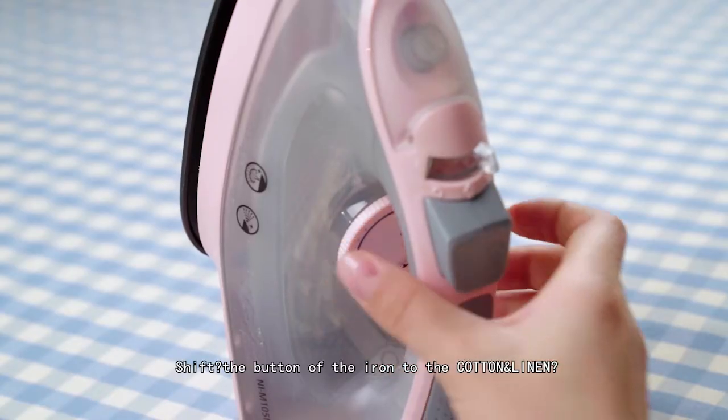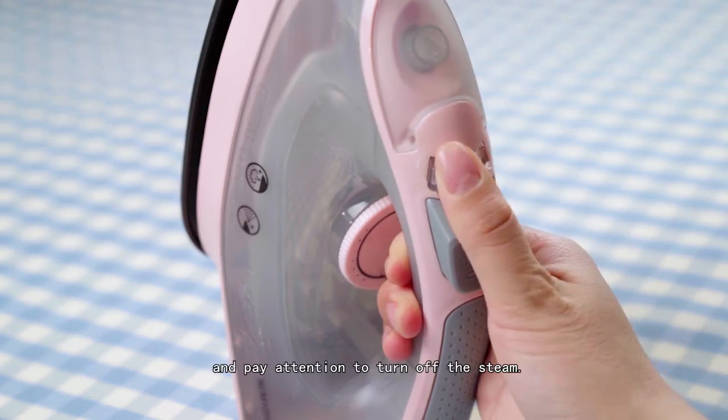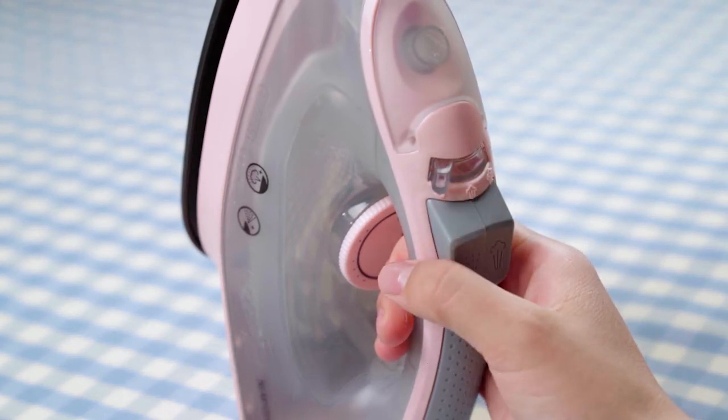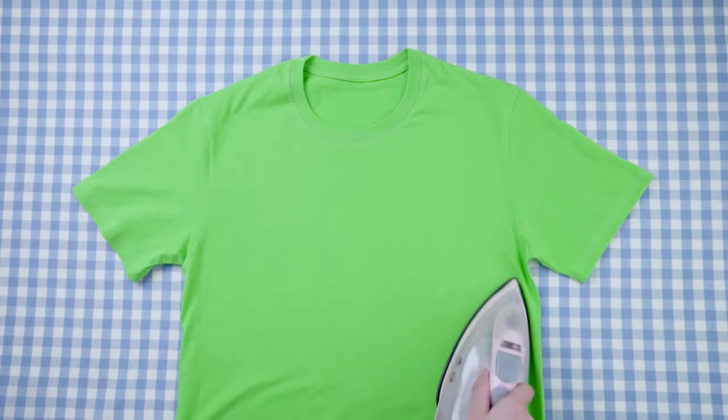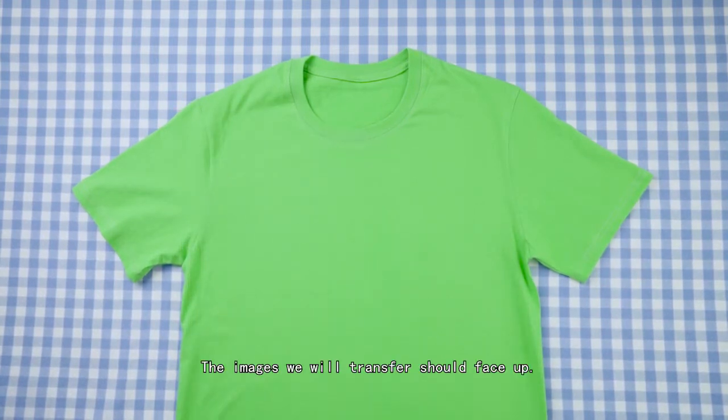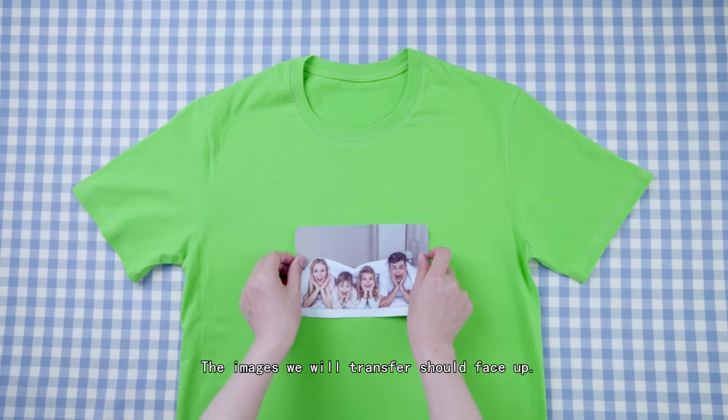Shift the button of the iron to the cotton and linen and pay attention to turn off the steam. Then we can iron the clothes. The images we will transfer should face up.